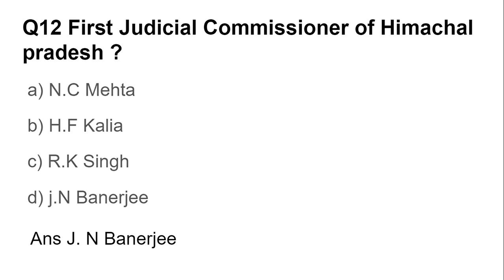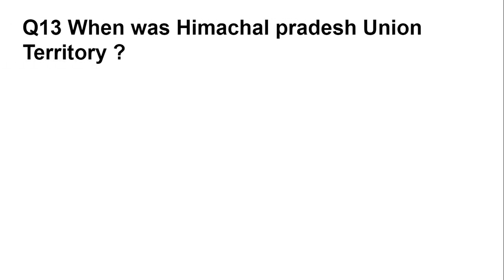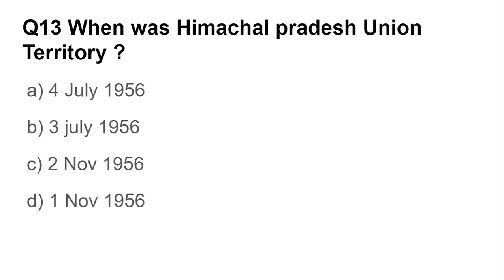Question number thirteen: When was Himachal Pradesh made a Union Territory? Options are: 4th July 1956, 3rd July 1956, 2nd July 1956, and 1st November 1956. The answer is 1st November 1956.